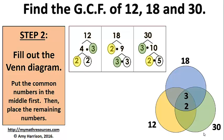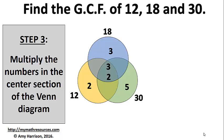Since there are no other common prime factors, we need to fill out the rest of the Venn diagram. We put the remaining 2 in the 12 section, the remaining 3 in the 18 section, and the remaining 5 in the 30 section.